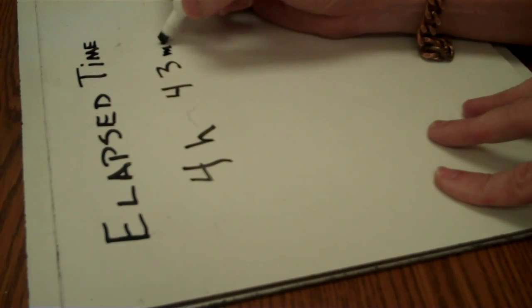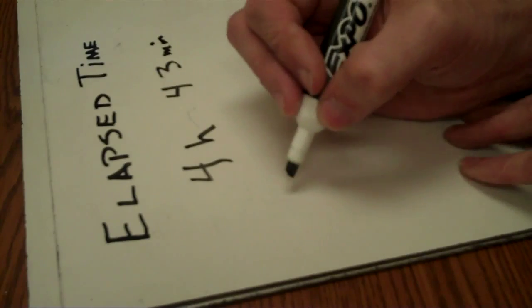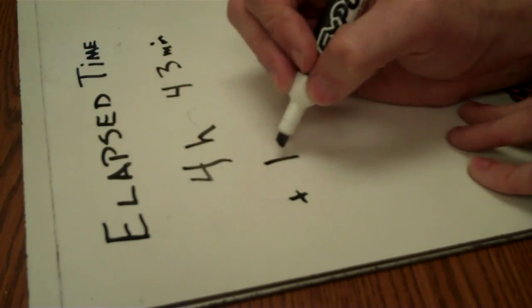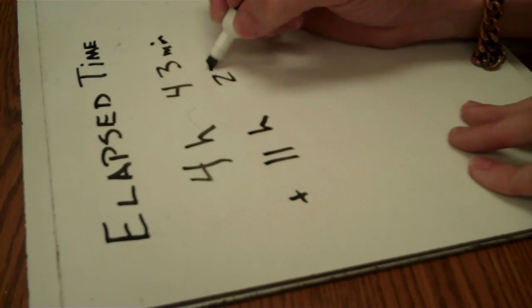If we have 4 hours and 43 minutes, let's say that we want to add 11 hours, 27 minutes.